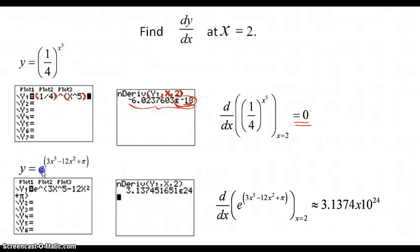And here is the next example. Here we have e to the 3x to the fifth minus 12x squared plus pi. And so you're going to put that into y1. You'll hit the e button, and the up caret and the open parentheses will be there. Then you enter the rest of the information and hit quit. Go to the home screen, bring up nDeriv, and bring up y1 and put it in the open parentheses. Then hit comma, then x, then comma, then 2, and close parentheses.